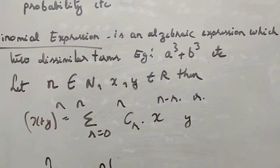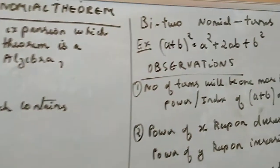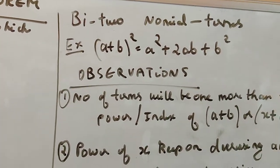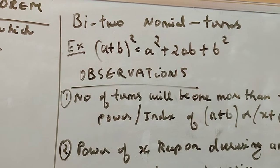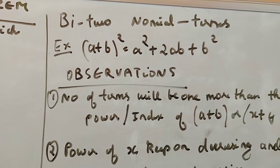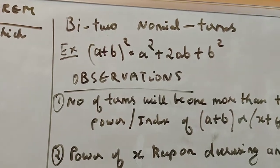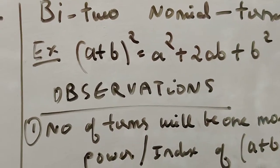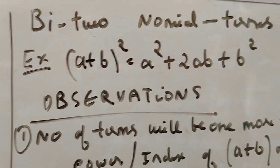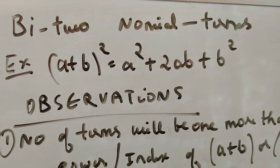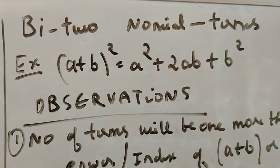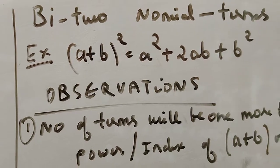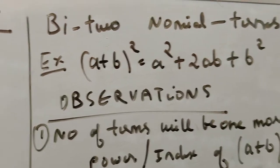I will give you an example so you can understand everything. The term 'bi' means two and 'nominal' means terms — so a binomial has two terms in an expansion. For example, a plus b whole square gives a squared plus 2ab plus b squared. This formula is derived from the binomial theorem only.